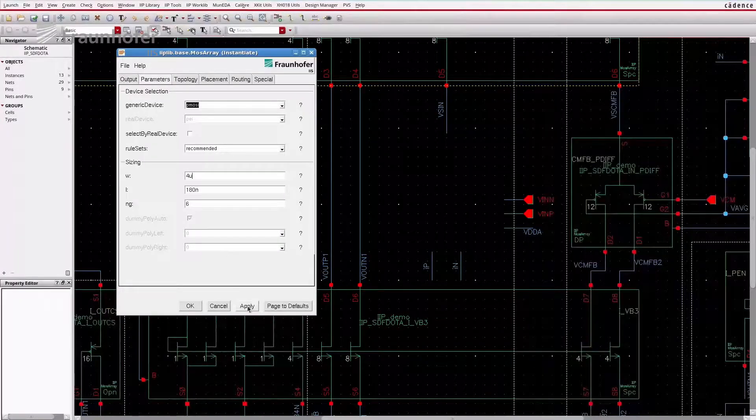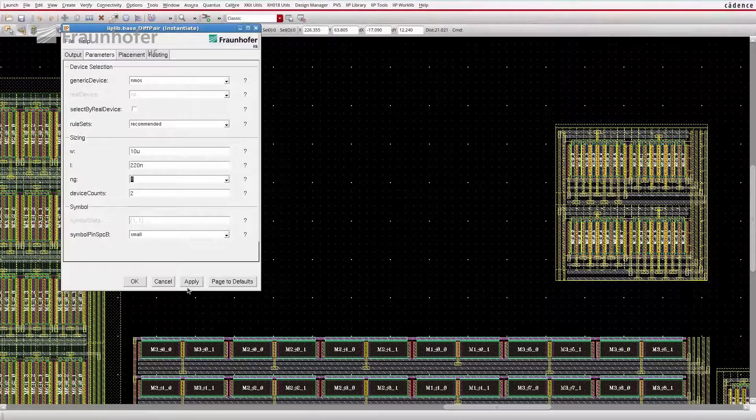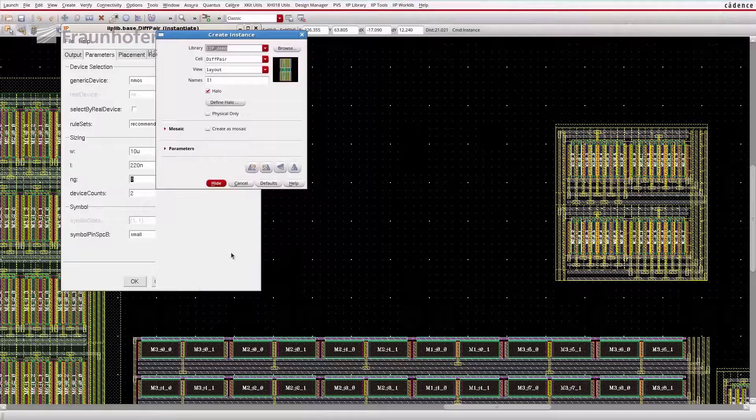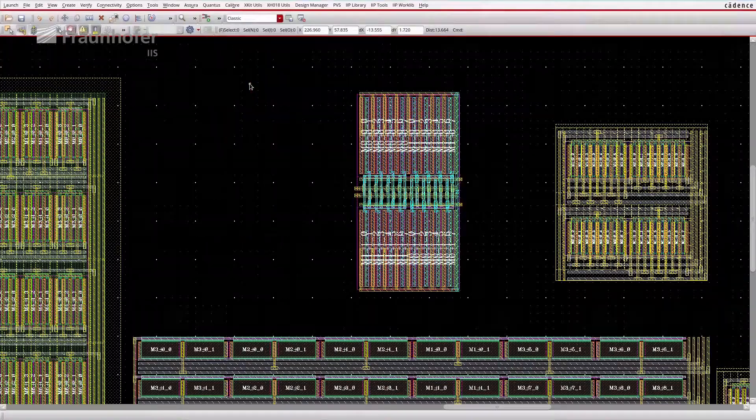With Intelligent IP we work on analog design automation. Intelligent IP is a library-based approach with flexible components. Using such flexible components, design engineers can automate parts of the analog design.